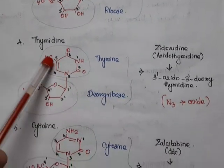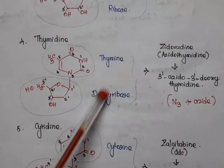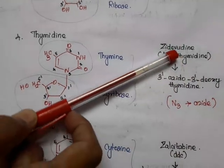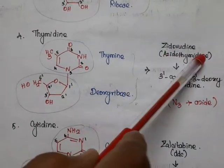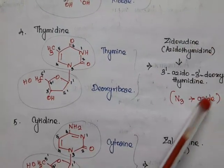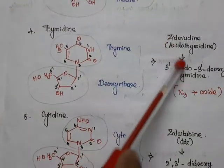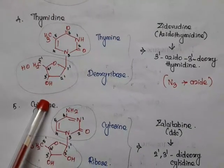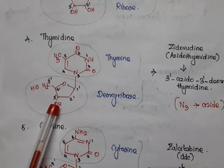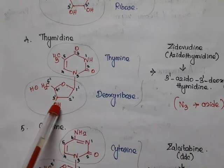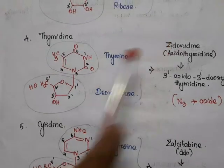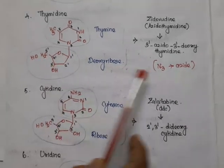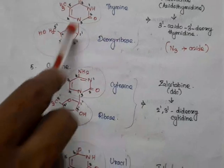Thymidine is the fusion of thymine with deoxyribose. Zidovudine is otherwise called azidothymidine. In azidothymidine, an azide group (N3) is attached to thymidine. The chemical name is 3'-azido-3'-deoxythymidine. In the structure of thymidine, the OH at the 3' position is replaced by N3 — that is the structure of zidovudine.